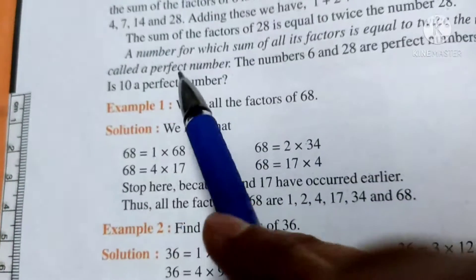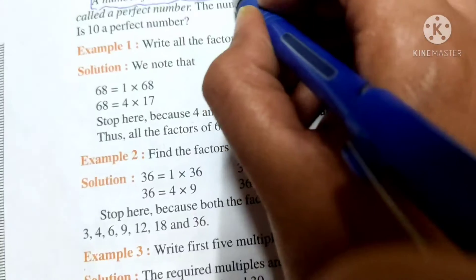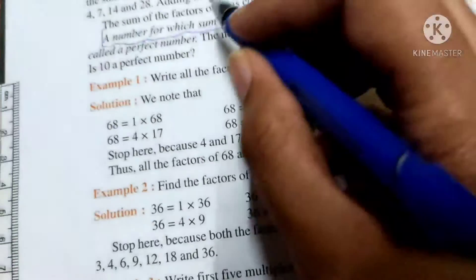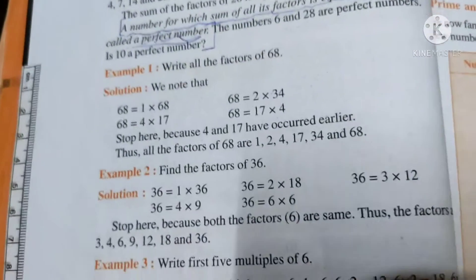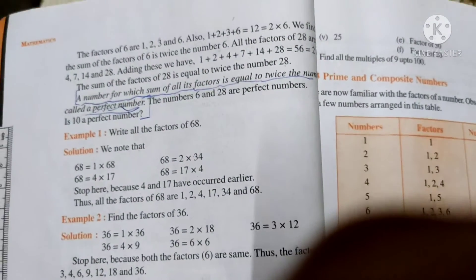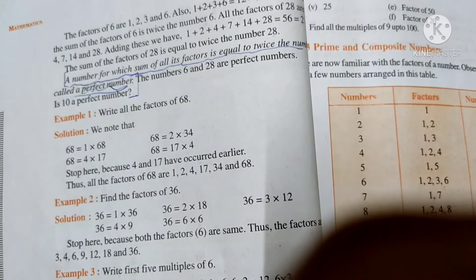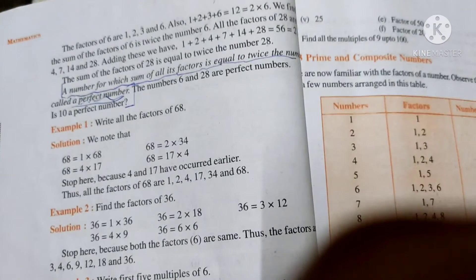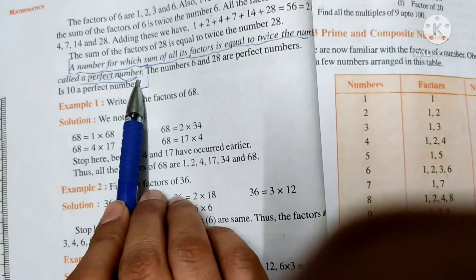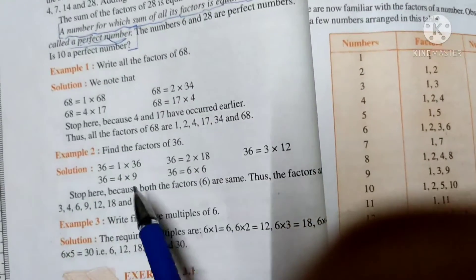One more interesting thing we should know about number is - a number for which sum of all its factors is equal to twice the number is called perfect number. Do you know what we mean actually by perfect numbers? Perfect numbers basically - what are we doing in the square? Just like two squared is 4, four is a perfect number. 9 is 3 squared, 4 squared is 16, 5 squared is 25. We call them perfect numbers.